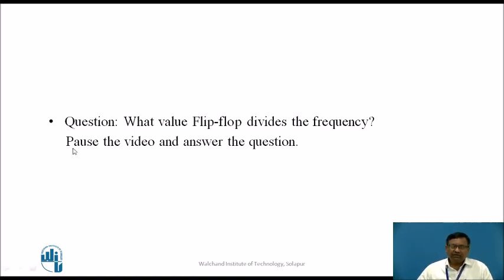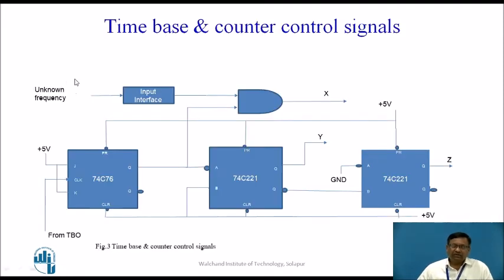Here we have a question: by what value does the flip-flop divide the frequency? You can pause the video and answer the question. The flip-flop is a toggle flip-flop; at every negative edge transition, there will be a change in the output. So the output frequency will be half of the input frequency when passed through the flip-flop — it divides by two.